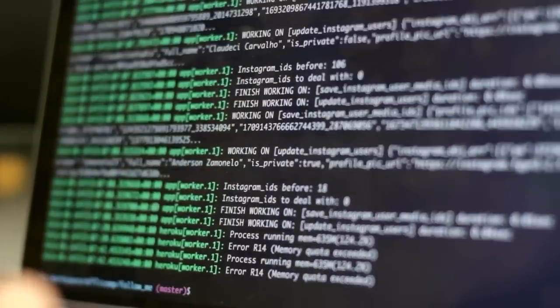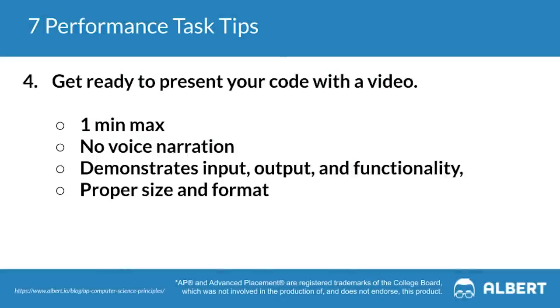You don't want to wait until the last second to use your video editing software to put together your project summary. Figure out which software you're going to use — whether that's Camtasia, Screencastify, Loom, QuickTime Pro, or iMovie — and storyboard your video before you start creating it. Your video should be one minute max, have no voice narration, demonstrate input, output, and functionality, and be output in the proper size and format. If your initial take doesn't meet these requirements, that's okay — you can change the format or size and incorporate captions in place of narration. Practice with your video editing software a few weeks or months in advance rather than waiting until the last second.